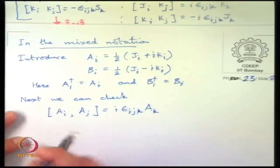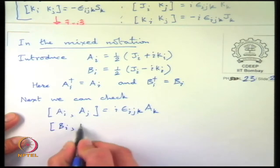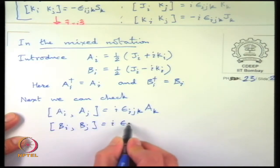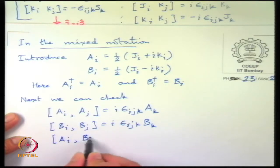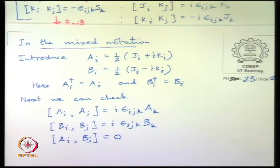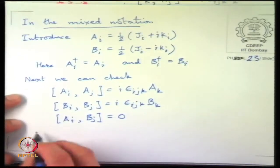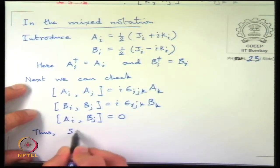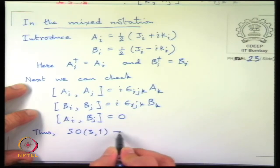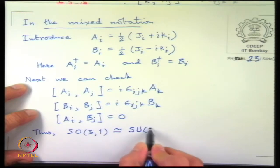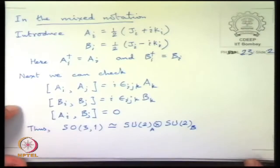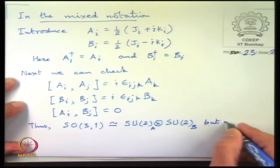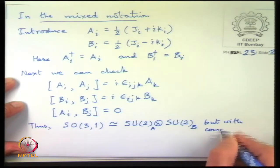Similarly the B's satisfy the same commutation algebra, and the most beautiful part is that they mutually do not interfere: [A_i, B_j] = 0. As a result SO(3,1) is equivalent to SU(2) cross SU(2), but with complexification — as algebras.